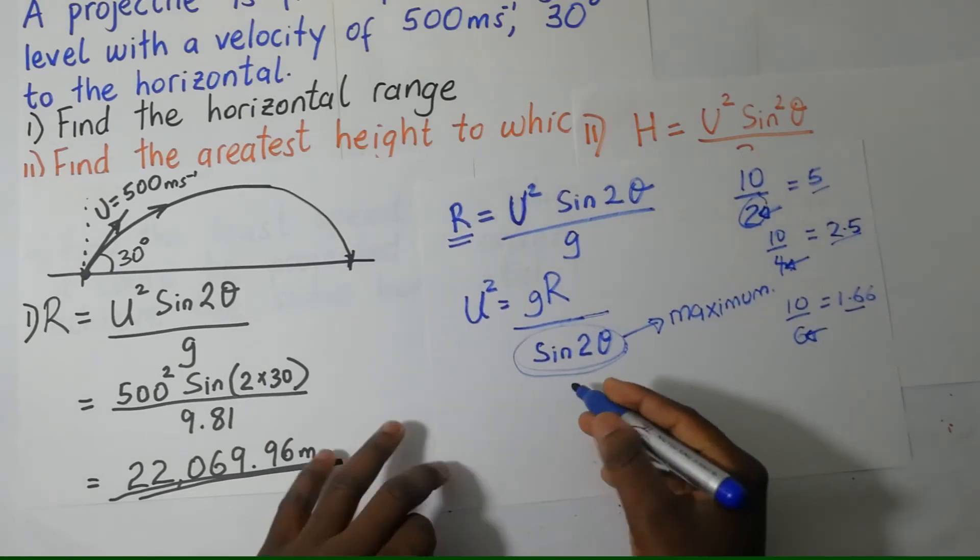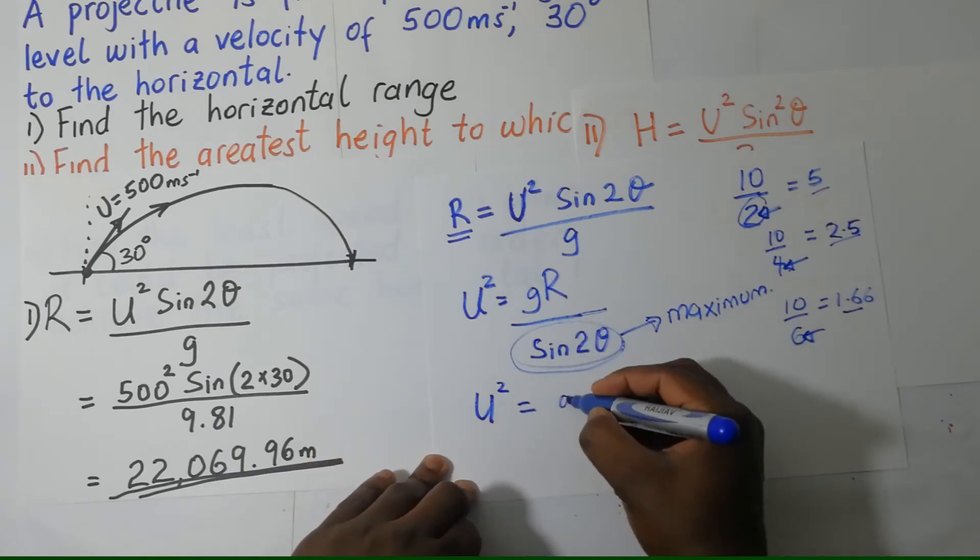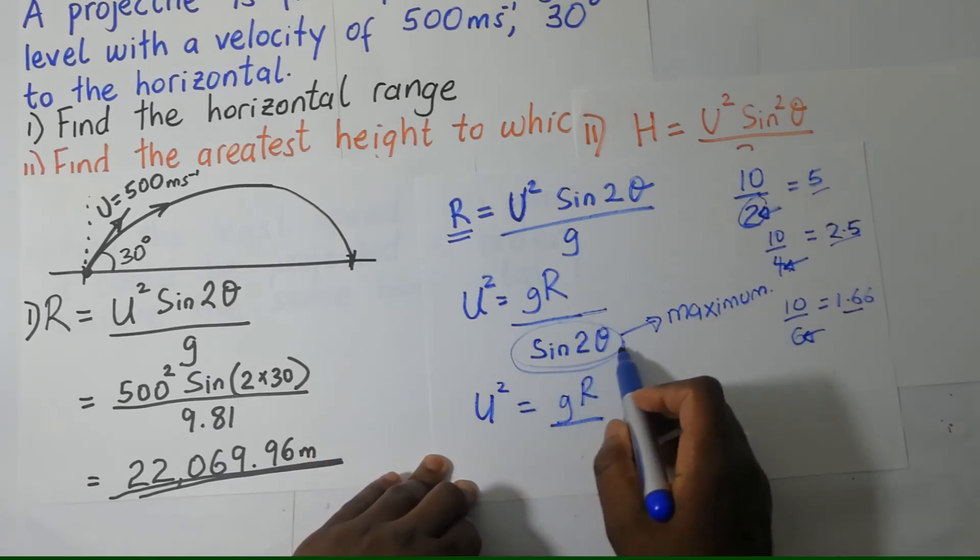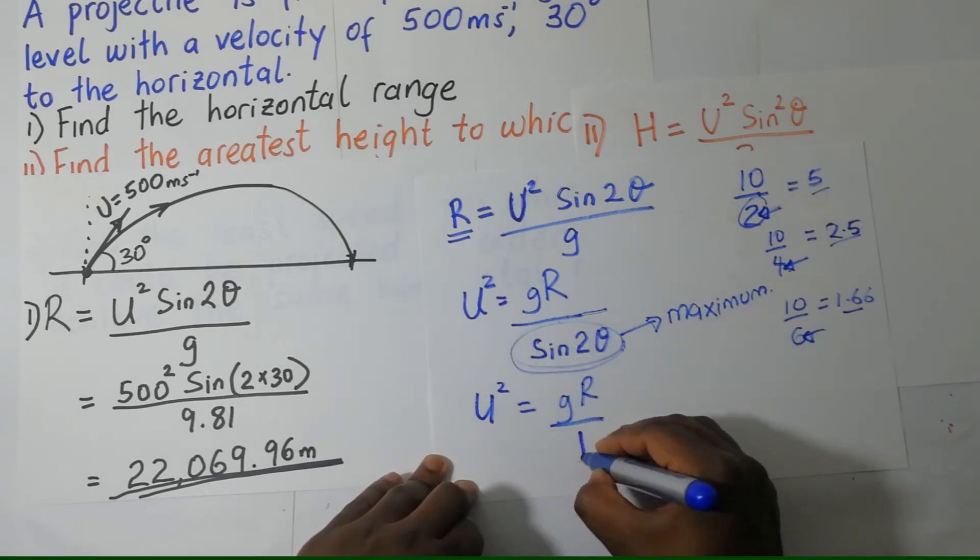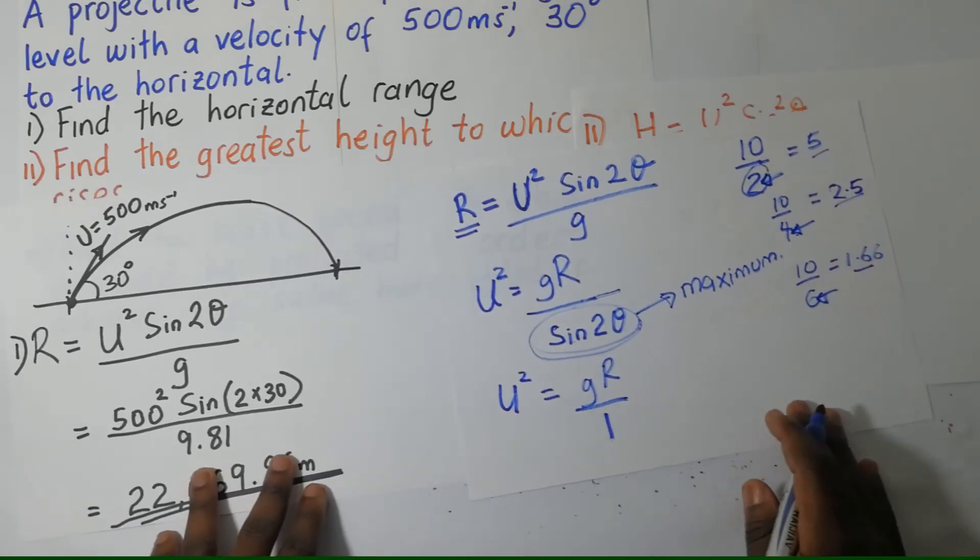So this means that U squared here is going to become G times R divided by 1. That's the maximum value of sine 2 theta. It is 1. That is coming from trigonometrical theories.